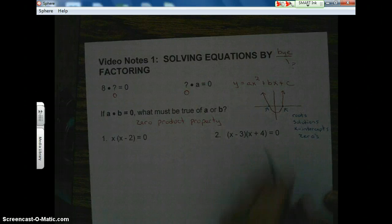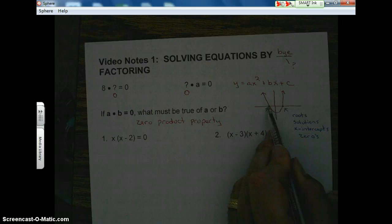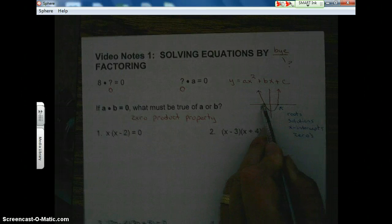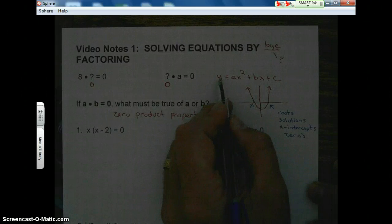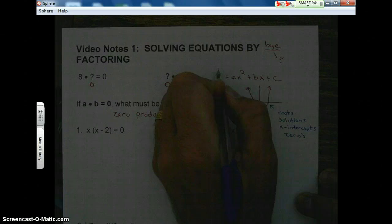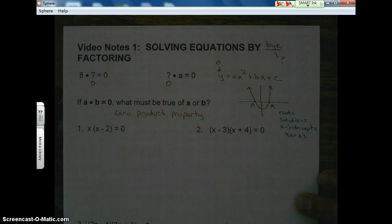the solutions, the x-intercepts, and possibly the zeros. Okay? Now, if this is where the solutions are located, what is the value of y for both of these points? Well, zero of course. So our y has got to be equal to zero. Okay? So,